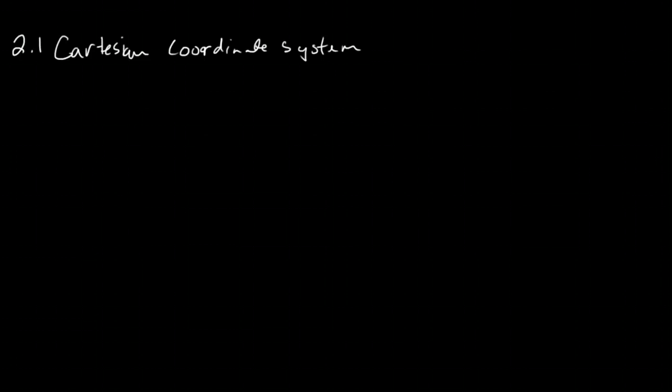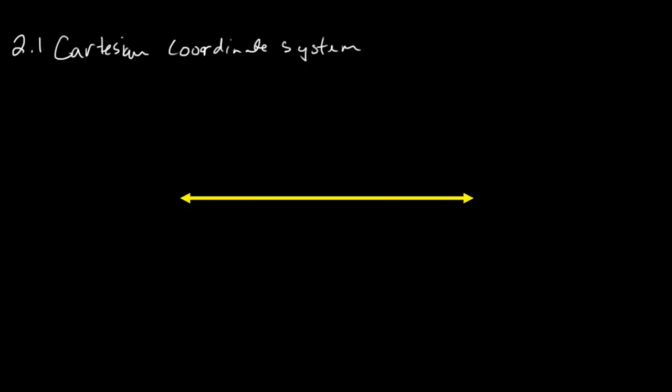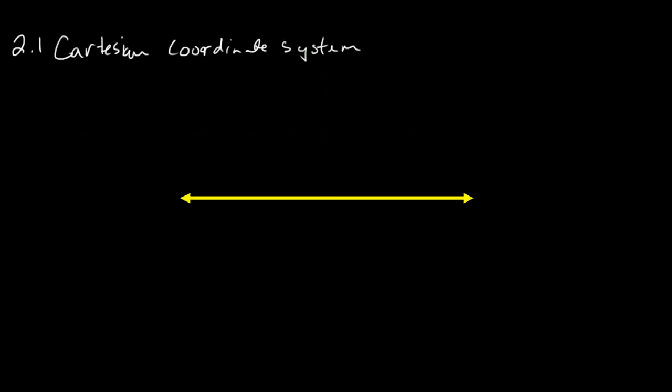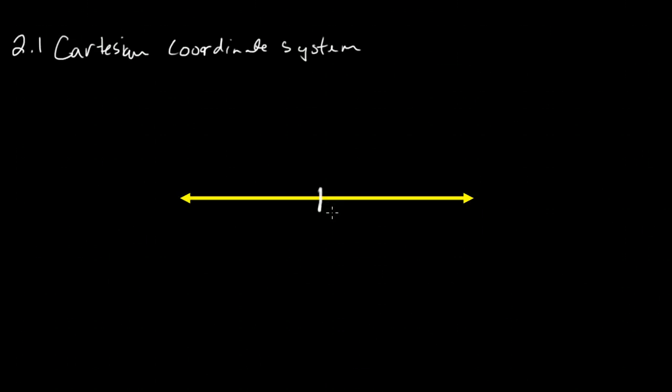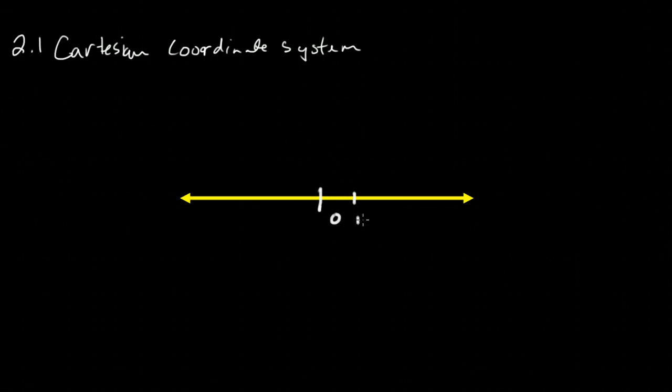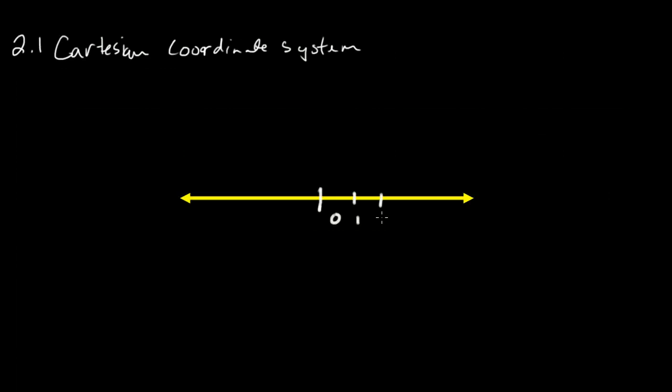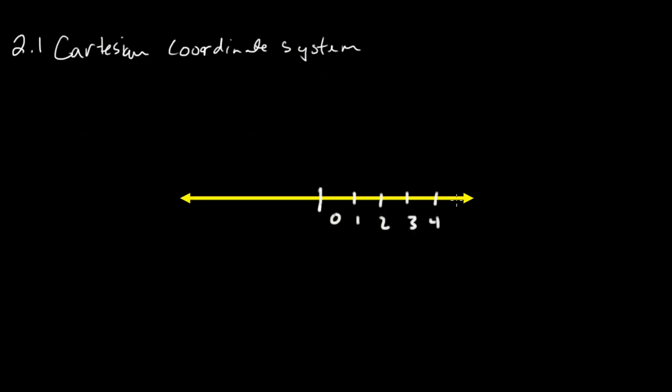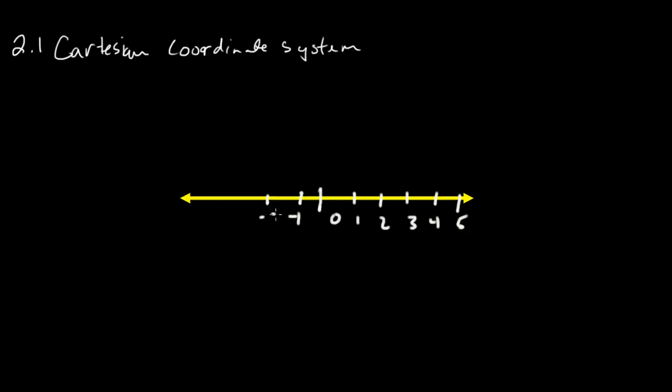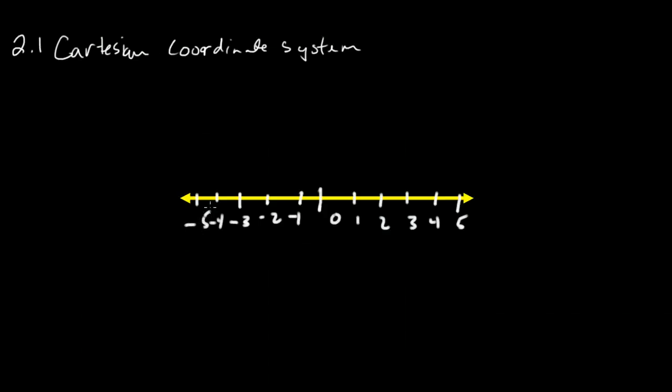We know that on a number line, we have an origin value starting at 0, and we go in a positive direction by increments of 1 on infinitely, and we can go in a negative direction, also by increments of 1, but also infinitely.